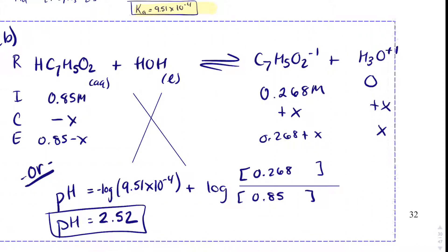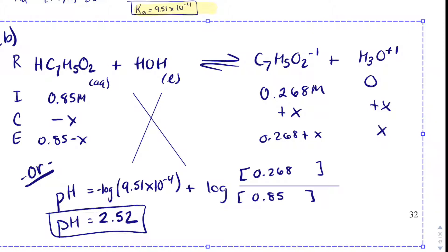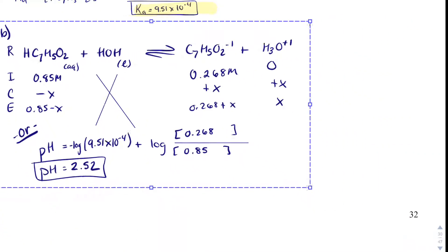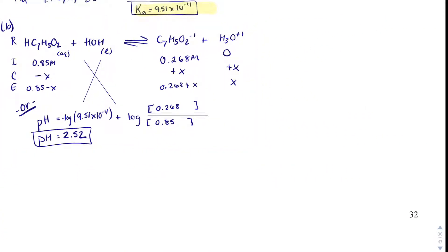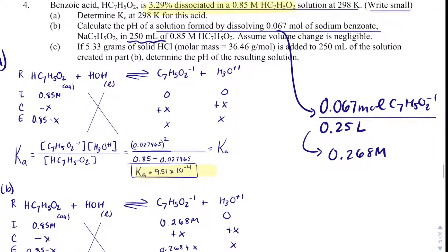So that is how you solve part B. You could use a RICE table, but if you recognize something as a common ion problem, I would use the Henderson-Hasselbalch equation.